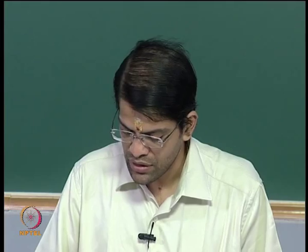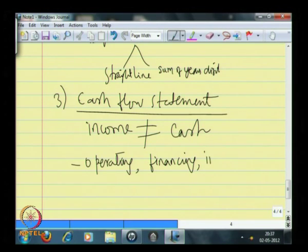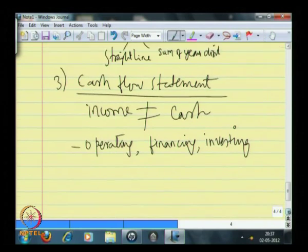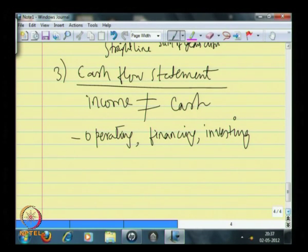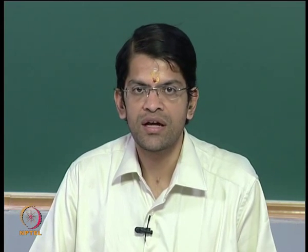These activities are predominantly categorized into three types: operating activity, financing activity, and investing activity. By and large, if you are able to categorize all the activities under these three heads and study how each activity has influenced the behavior of cash, the summation of all the activities that have influenced cash between two successive accounting periods is what gets recorded as a cash flow statement.